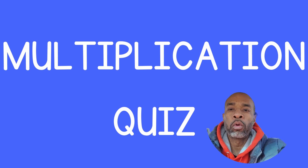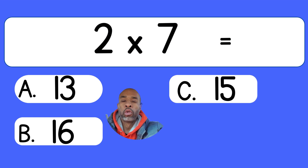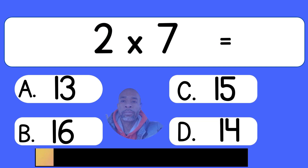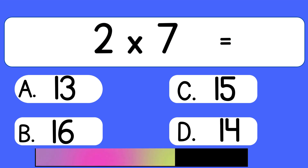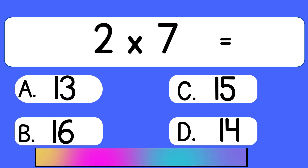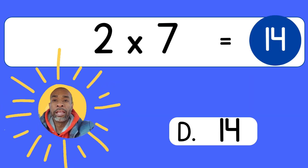Multiplication quiz. 2 times 7. 2 times 7 equals 14.